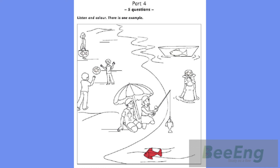4. Find the girl's bag. The girl's bag? Okay. I can see it. There's a fish on it. Color that fish brown. Brown? Yes, please.